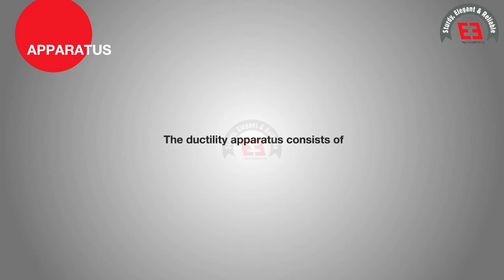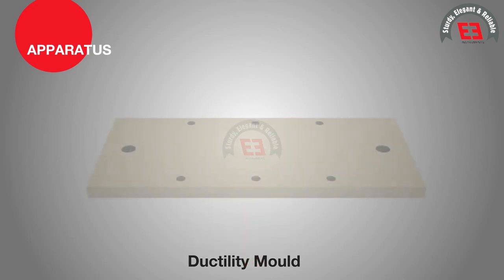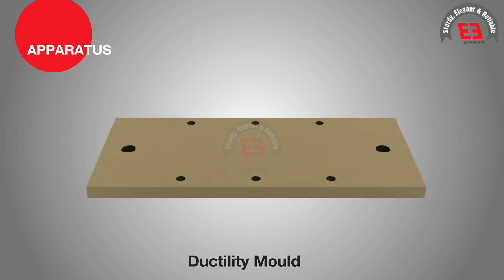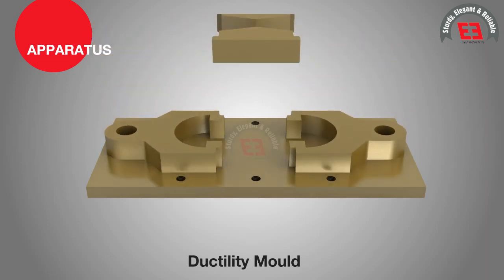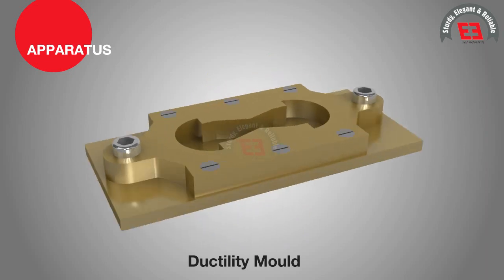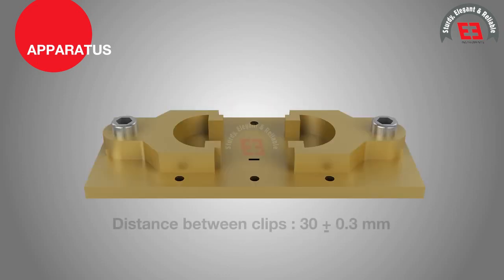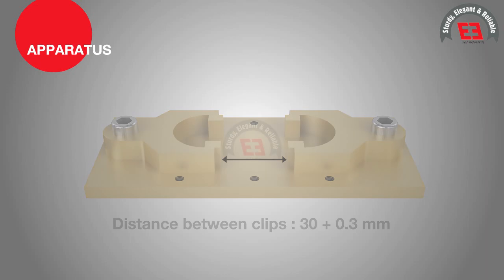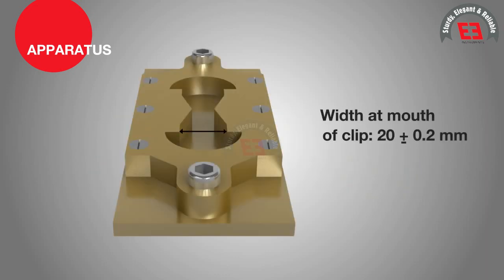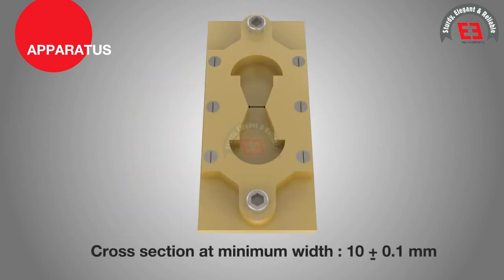Apparatus. The ductility apparatus consists of a ductility mold. The ductility mold is made of brass metal and consists of two end clips and two side pieces with the following dimensions: length 75 mm plus or minus 0.5 mm; distance between clips 30 mm plus or minus 0.3 mm; width at the mouth of clip 20 mm plus or minus 0.2 mm; cross section at minimum width 10 mm plus or minus 0.1 mm.